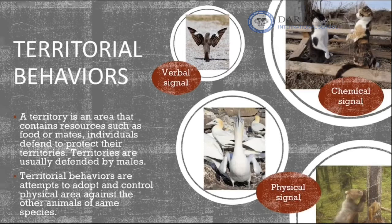The third type of competitive behavior is territorial behavior. A territory is an area that belongs to an individual and contains all the resources it needs. Individuals tend to defend and protect their territories against other animals. For example, if food is available in a specific area, animals will protect that area in order to benefit from those resources.